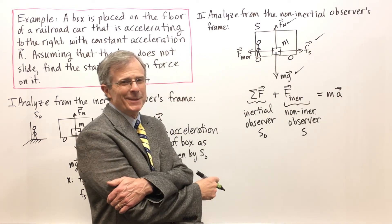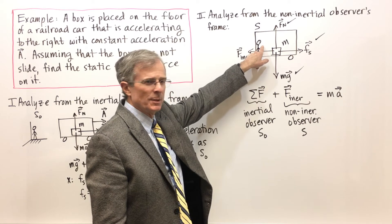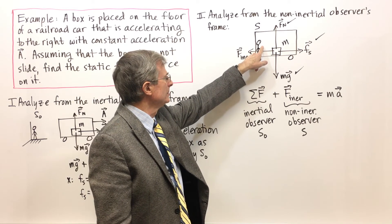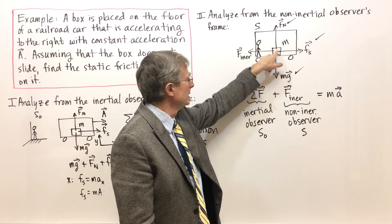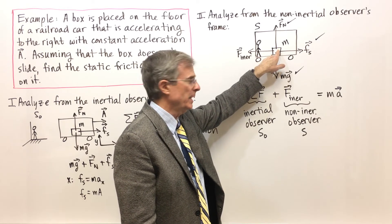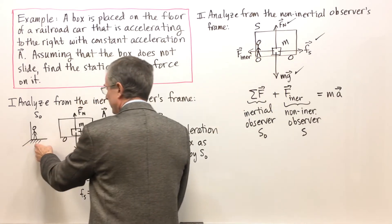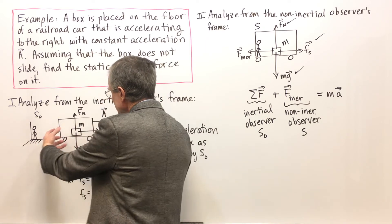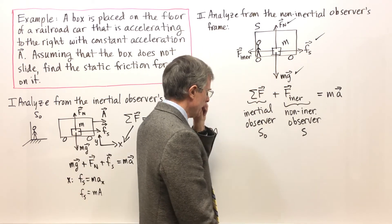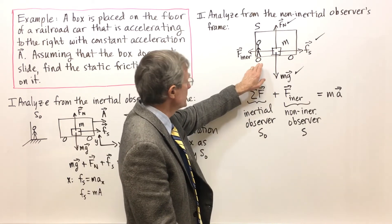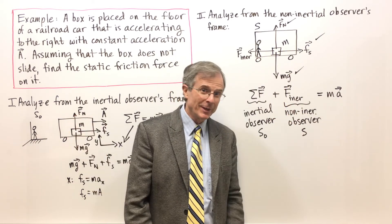And that's supposed to equal the mass times the acceleration of the box. Well, here's the interesting thing about this. From this observer's point of view, that box is three feet in front of him or five feet or whatever the distance is. That box is not accelerating from observer S's point of view. It is accelerating from observer S not's point of view. He can see it getting farther and farther away and going faster and faster. But this observer and the box are accelerating to the right. But as this observer looks at the box, he says that box isn't accelerating, it's stationary.